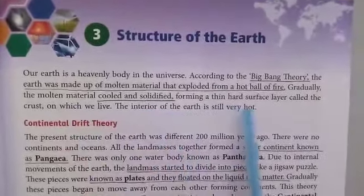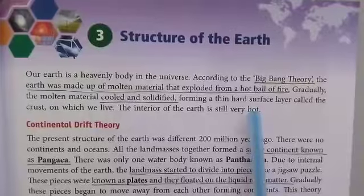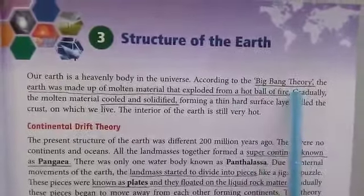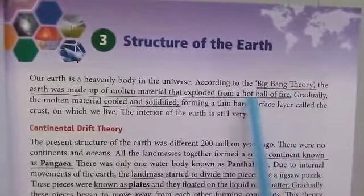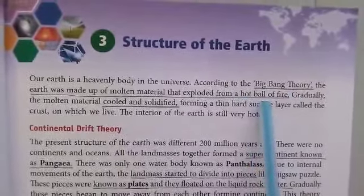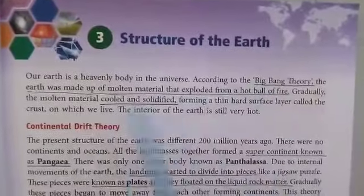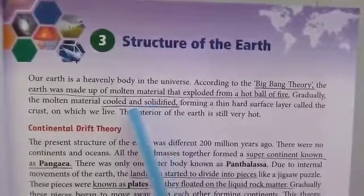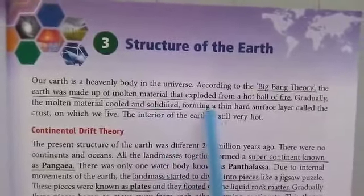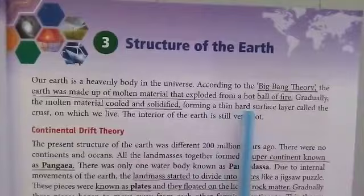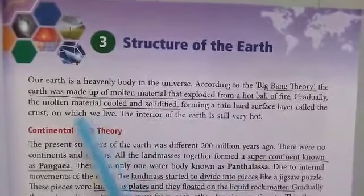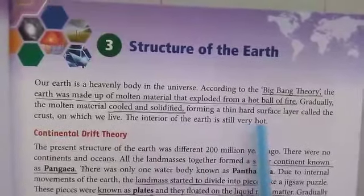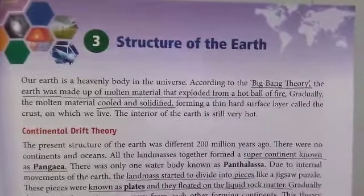The interior of the earth is very hot. One theory approved by scientists is the Big Bang Theory — a hot ball of fire exploded and gradually cooled and solidified, forming two layers: a thin outer layer called the crust, on which we all live, and an inner layer that is very hot and we cannot go deeper into.